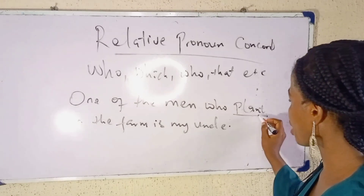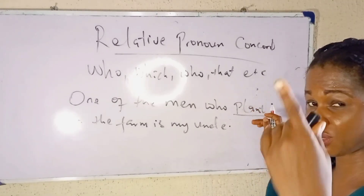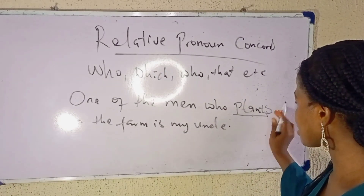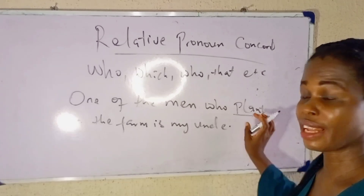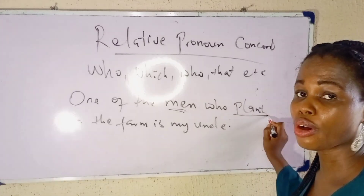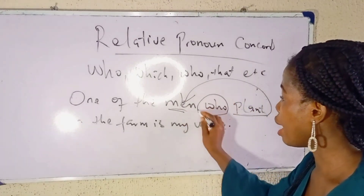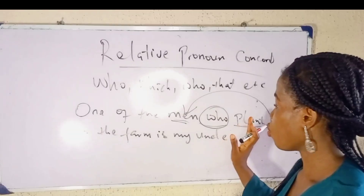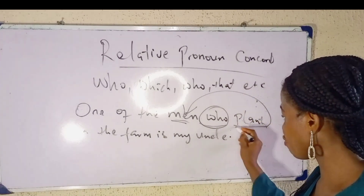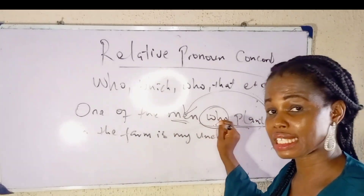Plants shows action. When we refer to third person singular, we use 'plants.' But we're not going to use 'plants' here because 'men' is plural, so we're going to use a plural verb. The verb that comes after the Relative Pronoun will agree in number with the noun or pronoun that is before the Relative Pronoun.